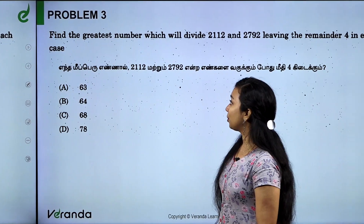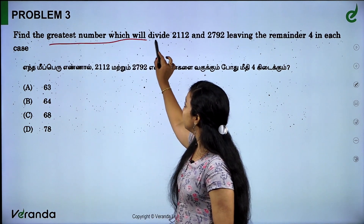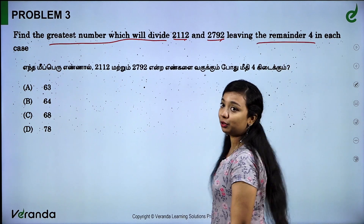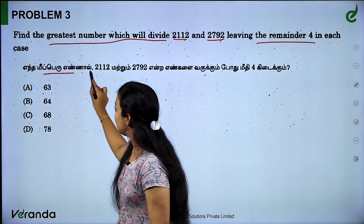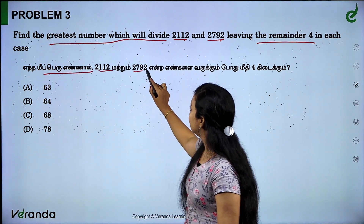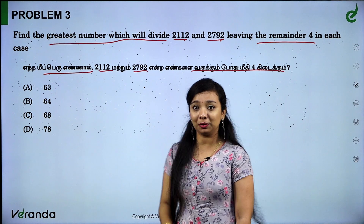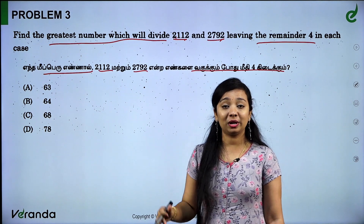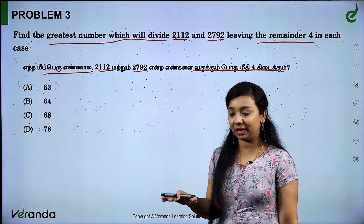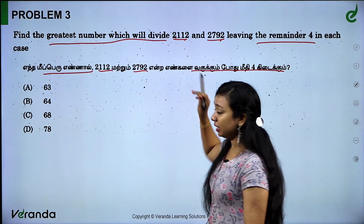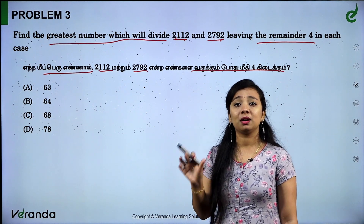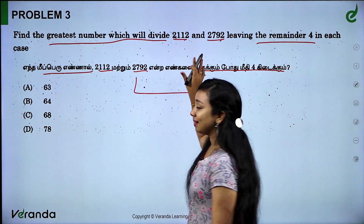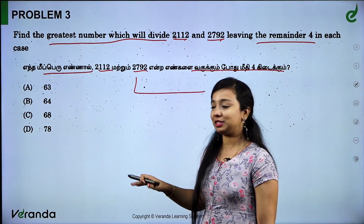Problem 3: Find the greatest number which will divide 2112 and 2792 leaving a remainder of 4. The remainder is 4. So the number divides both values leaving remainder 4. To solve this, we subtract the remainder 4 from both numbers first, then find the HCF. Let's apply the standard HCF method using the L-shape division.